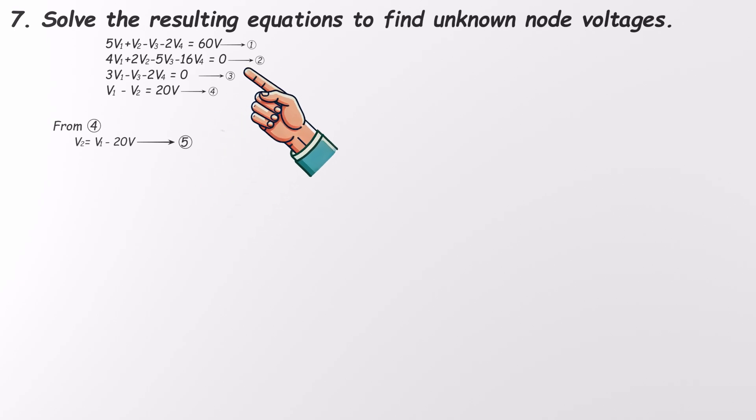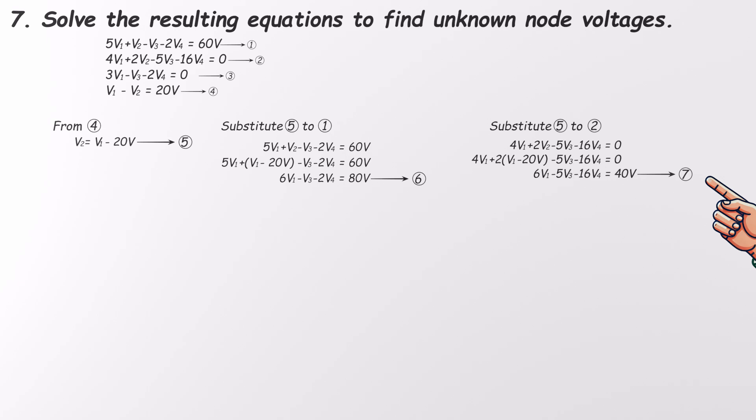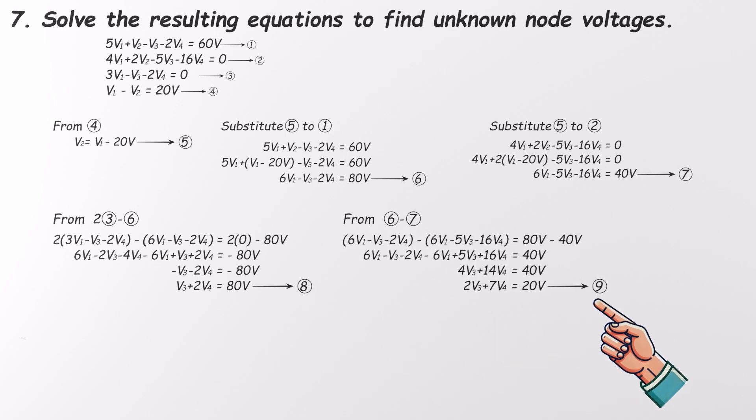Now we substitute this into equations 1 and 2 to eliminate V2. Substitute into equation 1, and we get a new version, our sixth equation. Do the same for equation 2, and we get equation 7. That leaves us with three equations, equations 3, 6, and 7, and three unknowns, V1, V3, and V4. Next, we use equations 3 and 6 to eliminate V1. That gives us a relationship between V3 and V4, our eighth equation. Now take equations 6 and 7 and eliminate V1 again. That gives us another equation involving only V3 and V4, our ninth.